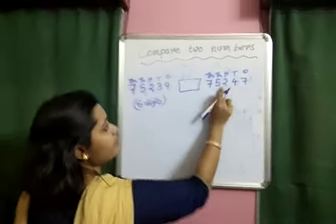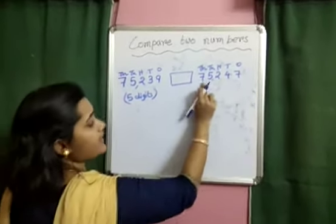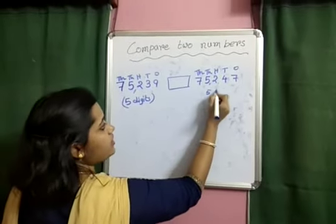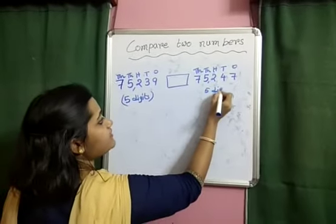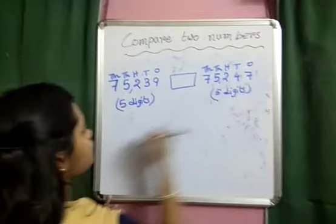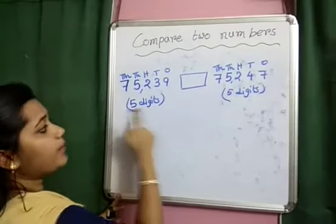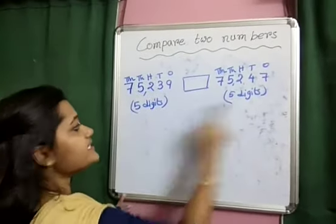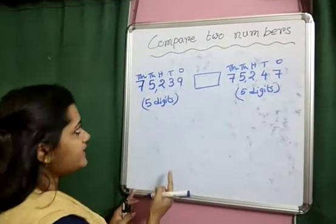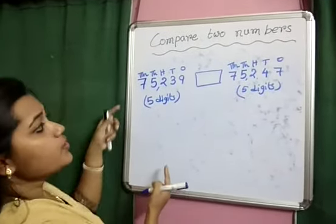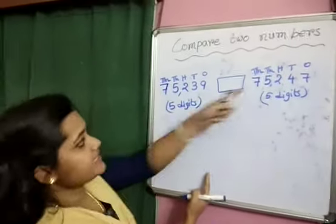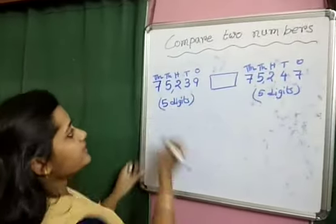Now check the second number: 1, 2, 3, 4, 5. In this case also, 5 digits are there. So when the number of digits are the same, we need to compare the highest place value.